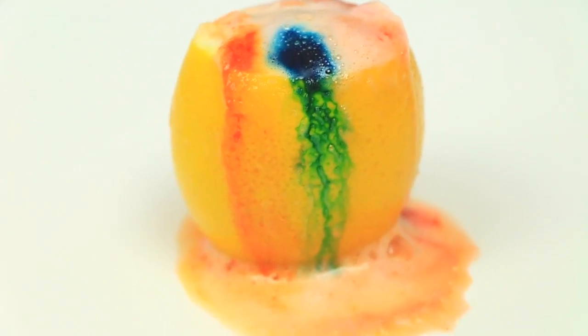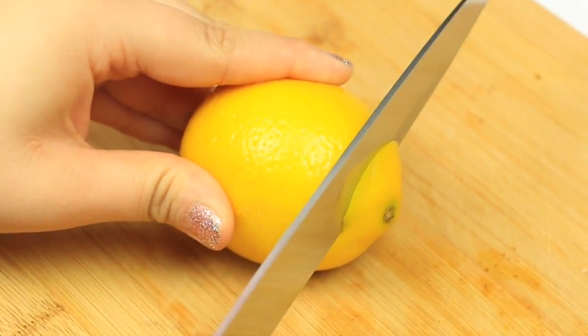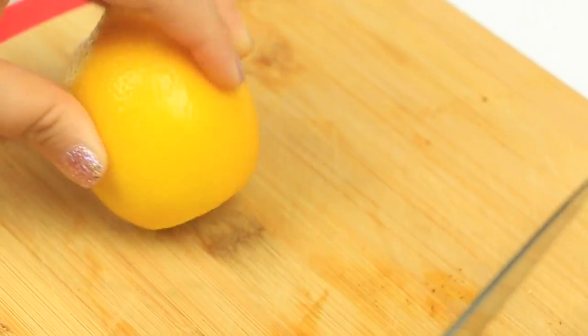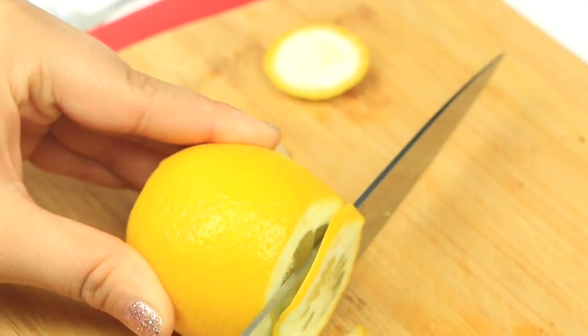Next, we are doing a lemon volcano. You're going to need two lemons. For the first lemon, we're going to go ahead and cut the bottom off just so it could be able to stand. To the same lemon, we're going to take the other side and cut off a piece. You don't necessarily have to cut it in half. Just cut off to where you see that you can actually see the inside.